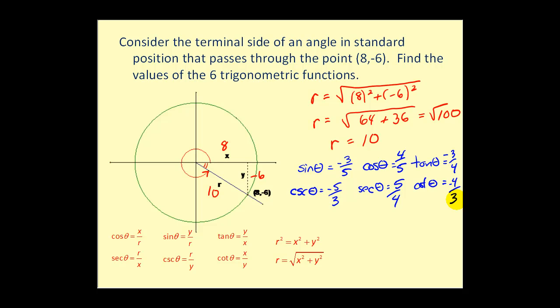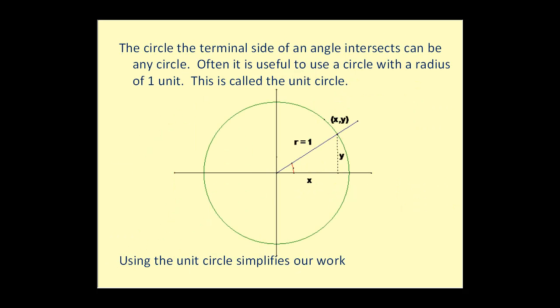Just pay close attention to the signs of x and y — it's essentially the same process as before. Now, the circle that the terminal side intersects can be any circle; however, it is often useful to use a circle with radius one, called the unit circle. Using the unit circle simplifies our work slightly, because knowing r equals one lets us draw the following conclusions.